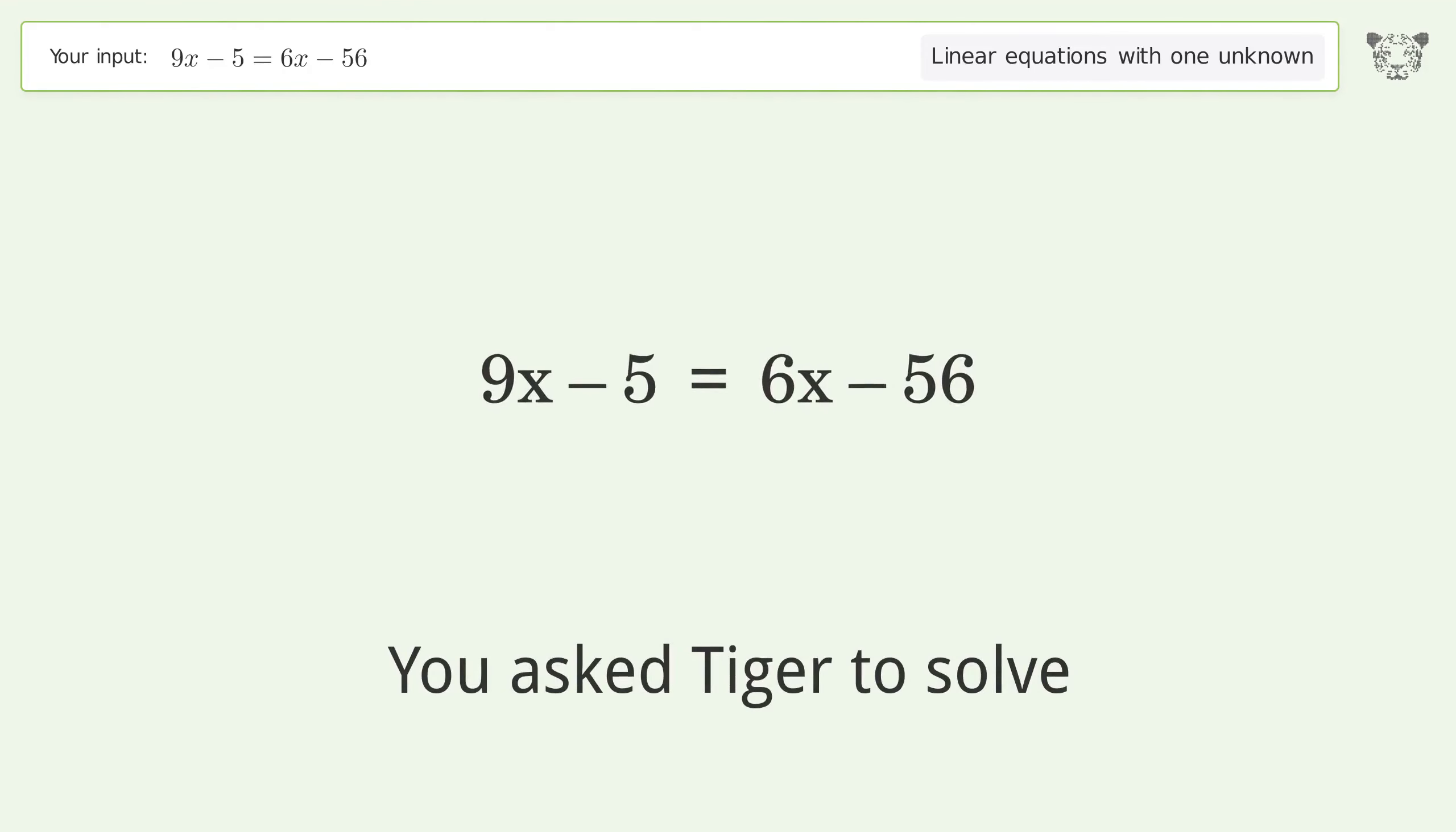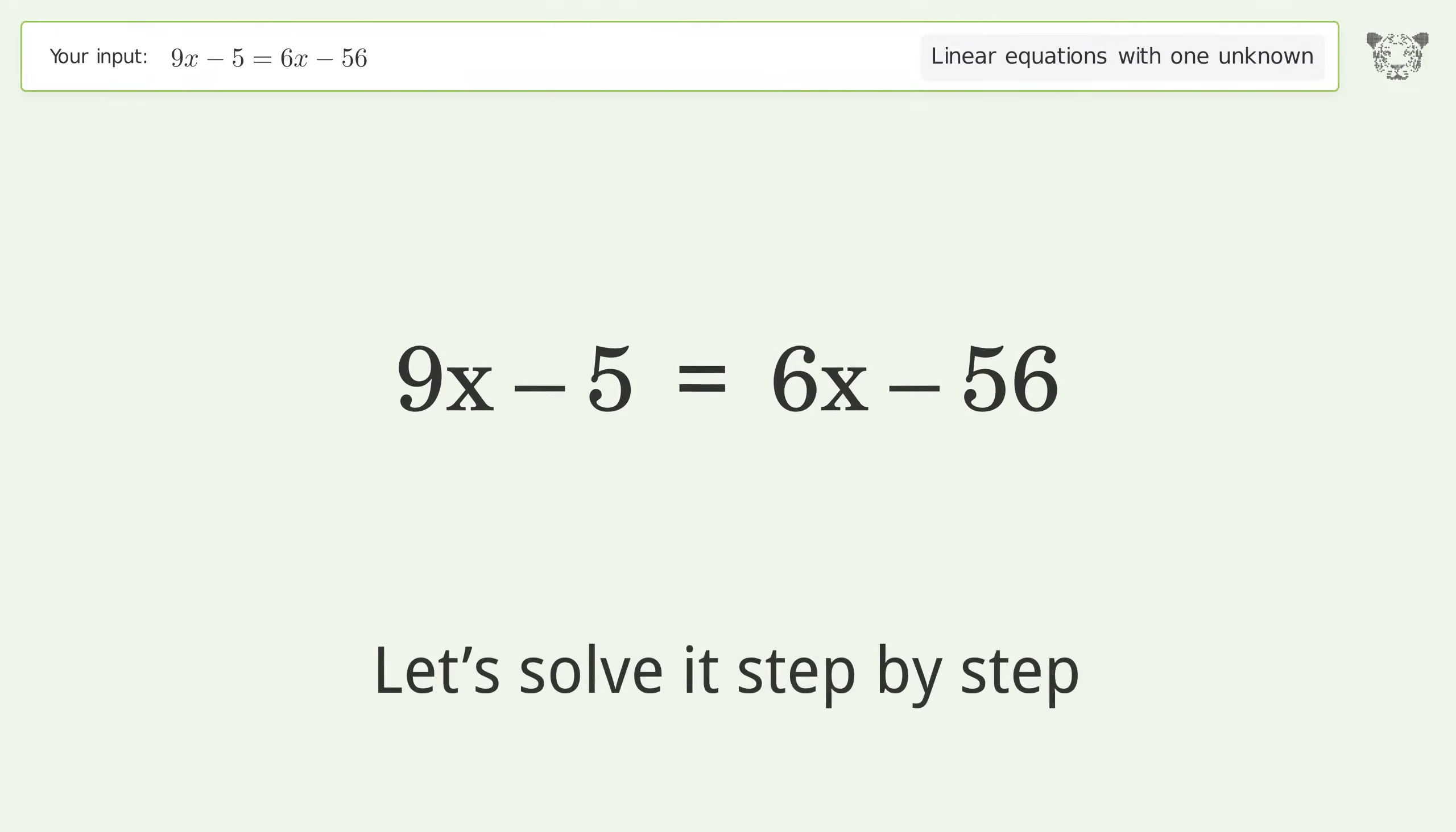You asked Tiger to solve. This deals with linear equations with one unknown. The final result is x equals negative 17. Let's solve it step by step.